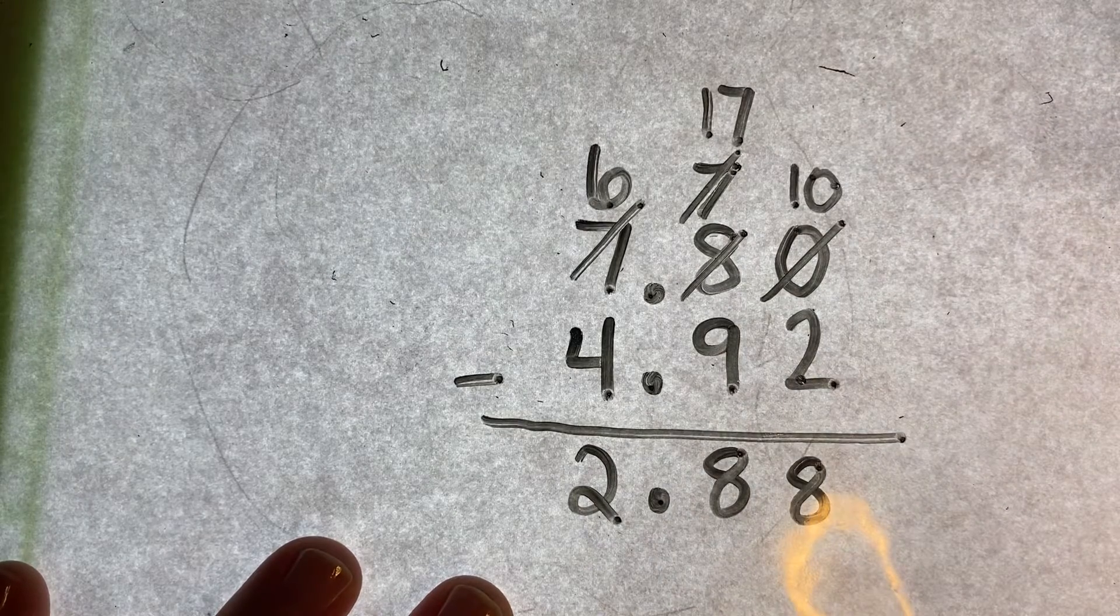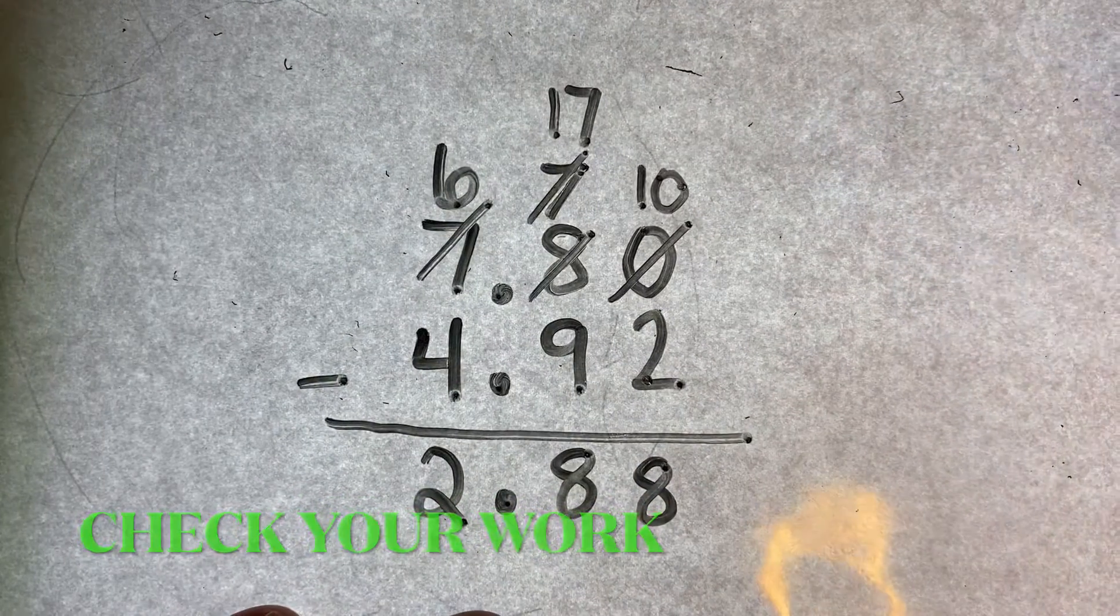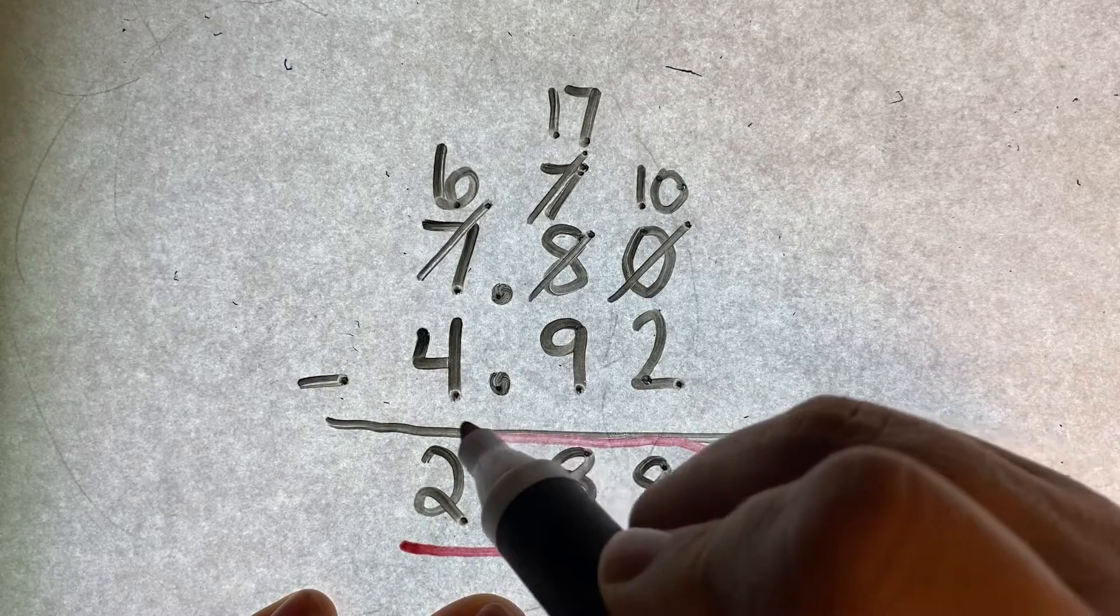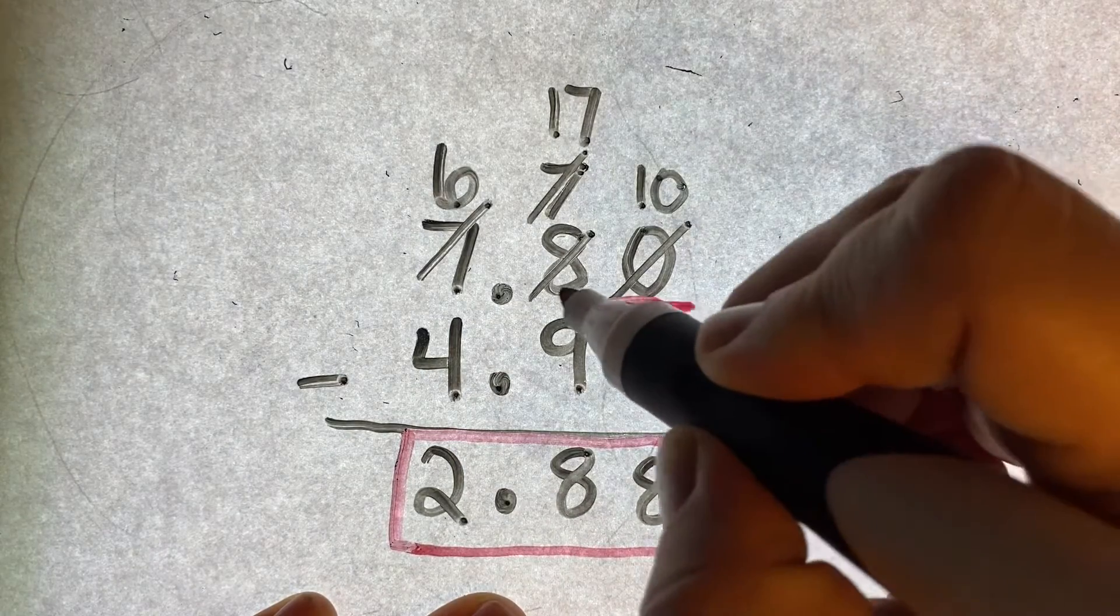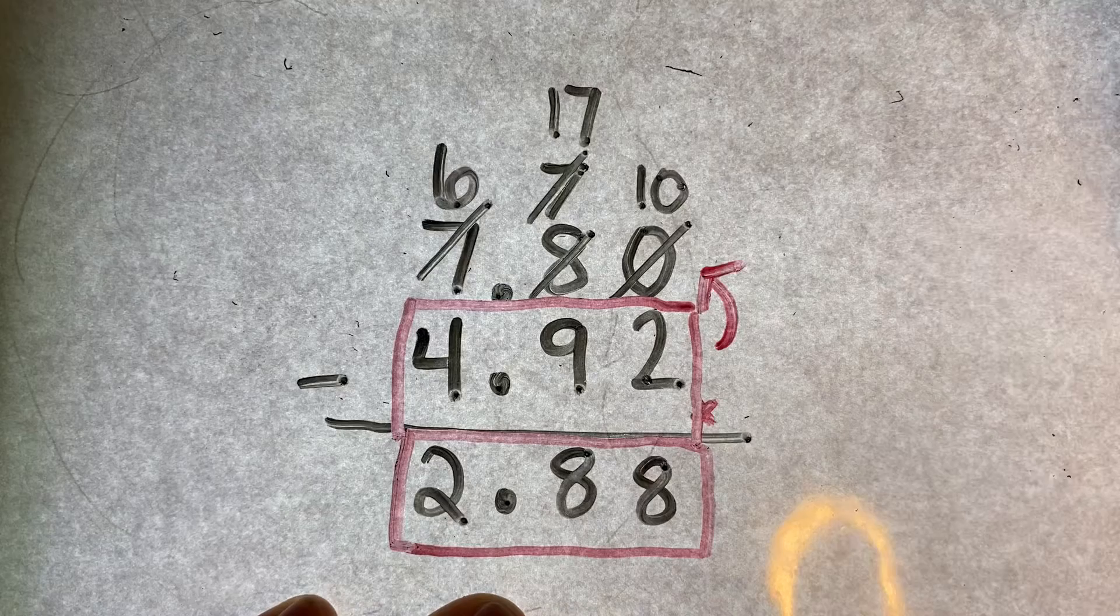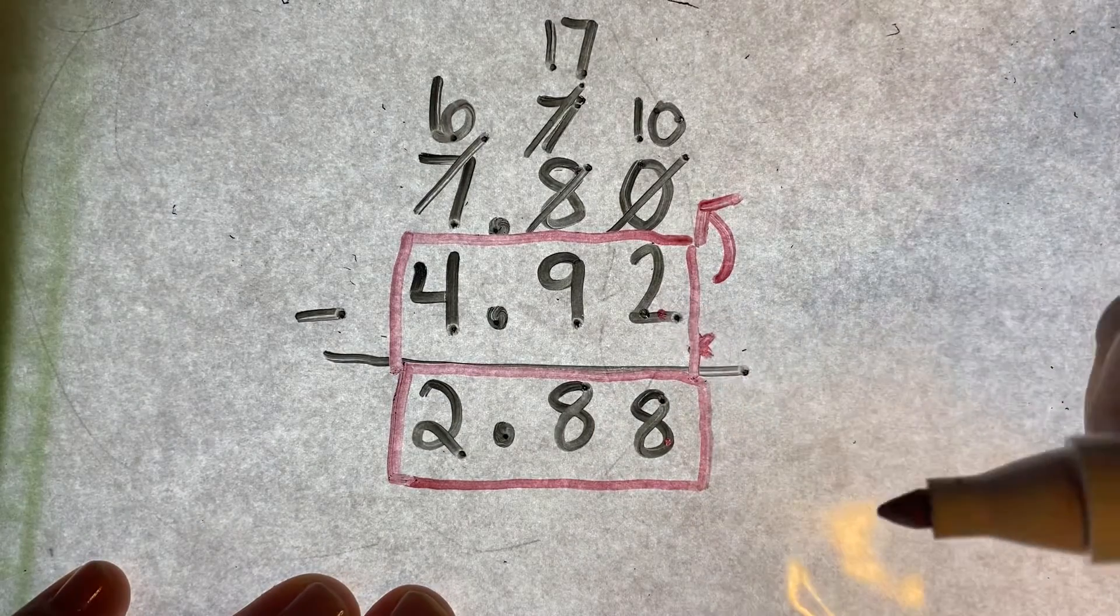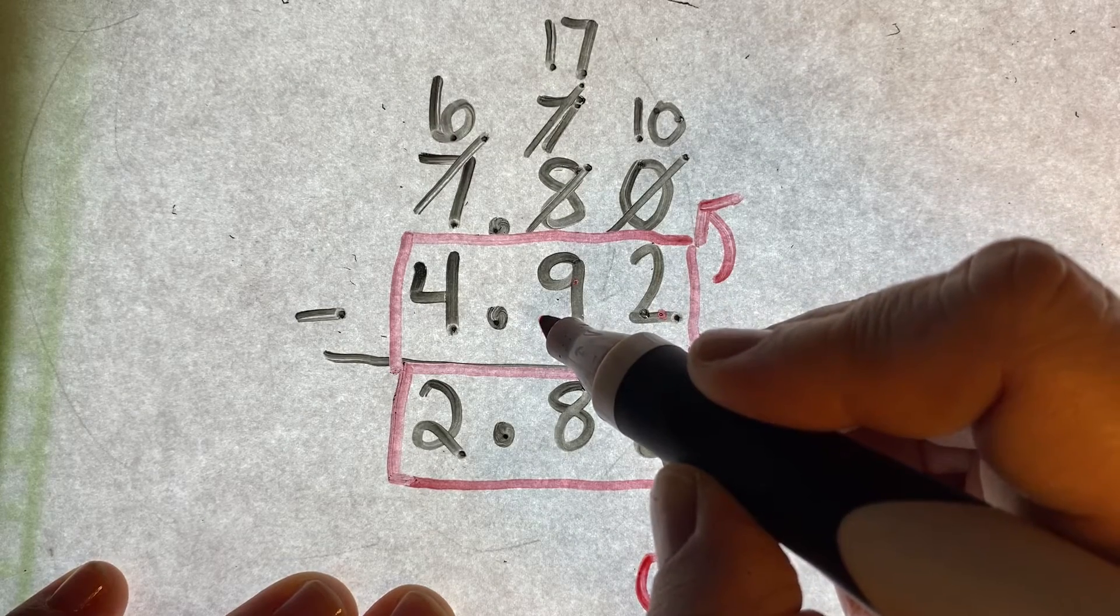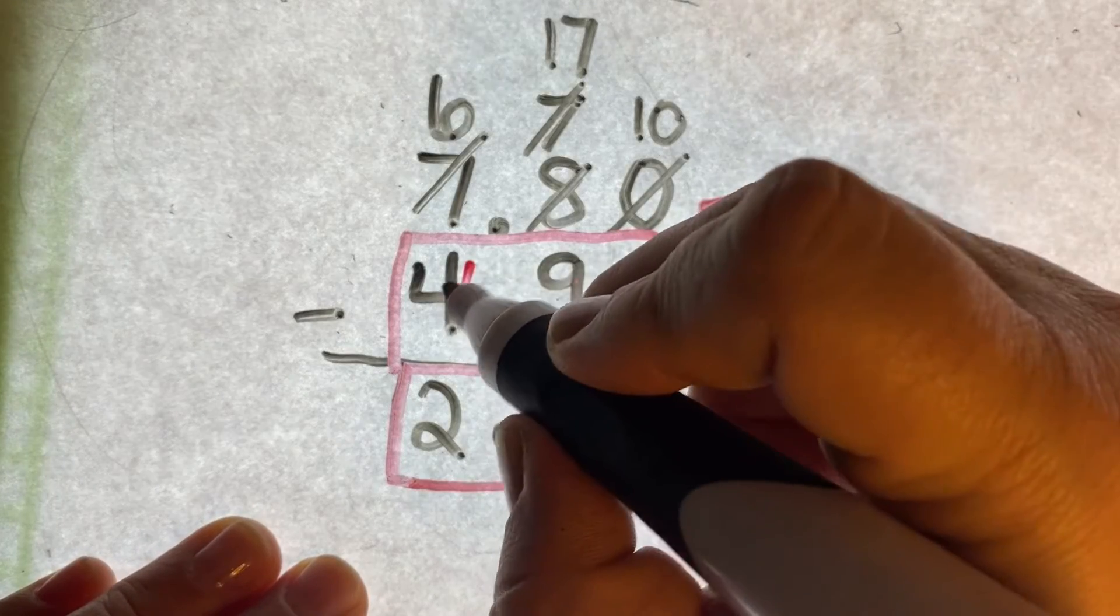A way that you can check your work just to see, did I do this right? I don't know. If I take my answer right here and I add it to this bottom number, four, it should equal this. So, meaning, if I were to say, well, eight plus two, that's ten. Carry the one. Nine, ten, plus eight is eighteen. Carry the one. Four, five, six, seven.